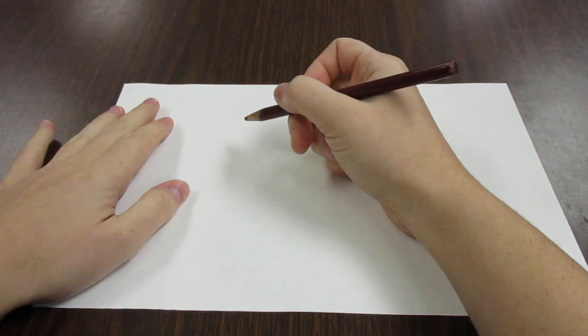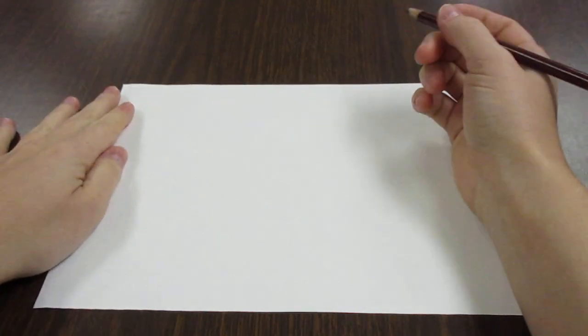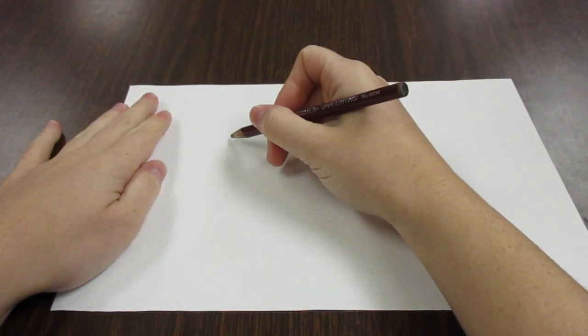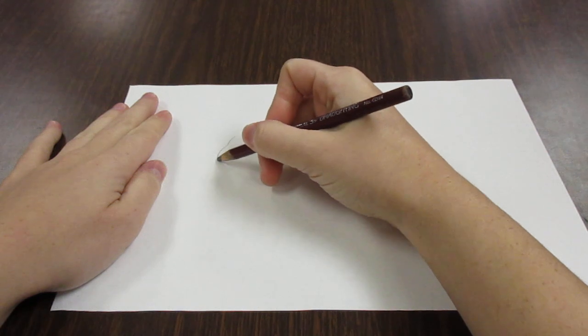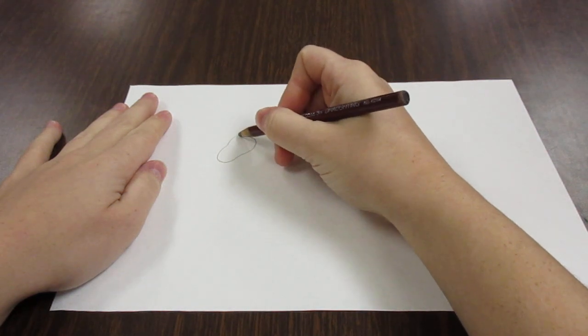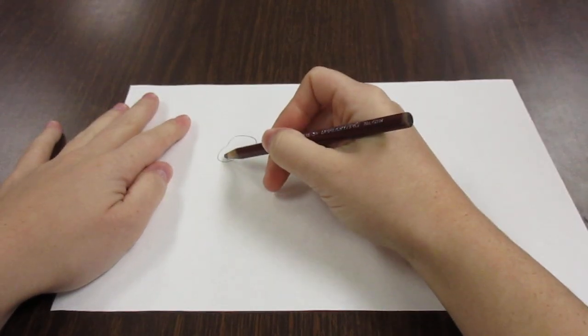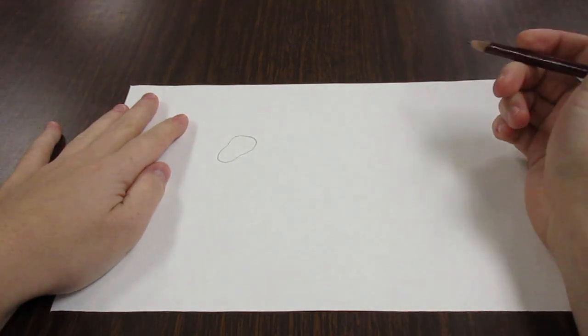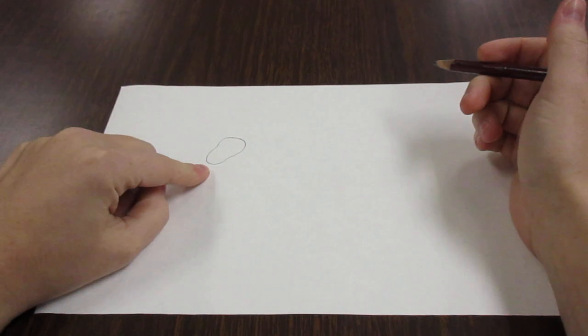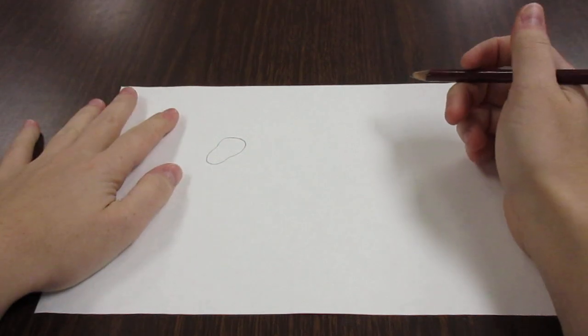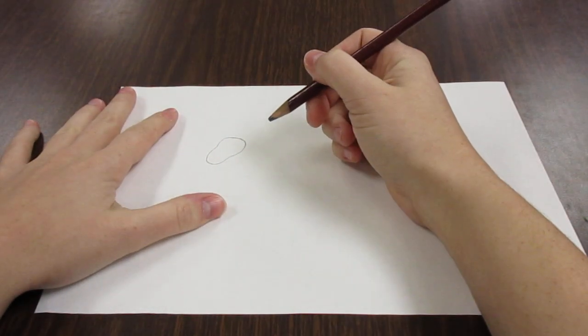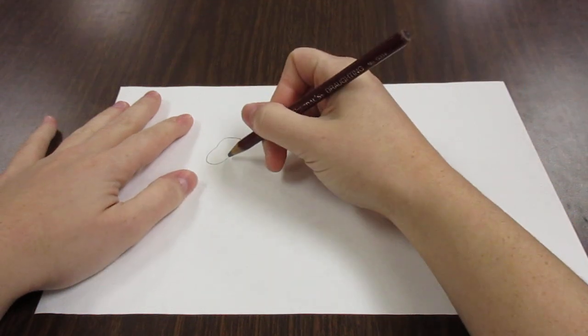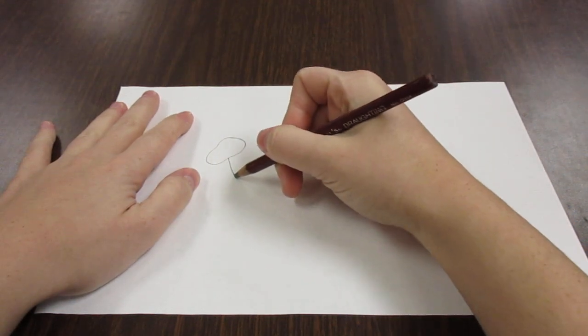For our picture we're going to start with the head. We'll make kind of this lumpy shape where it's skinnier in the bottom and bigger on the top. It doesn't matter if it looks just like mine, you're just going to try your best to get this sort of round shape.